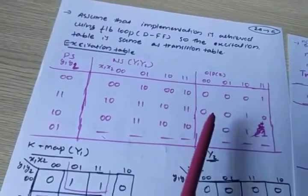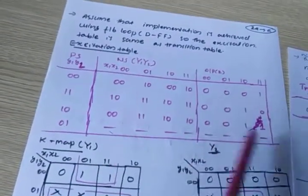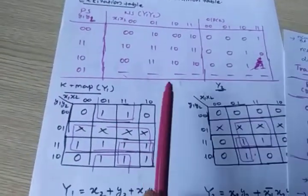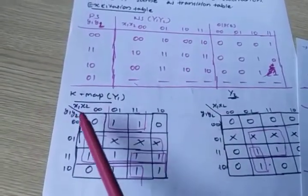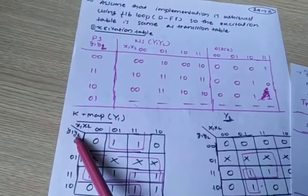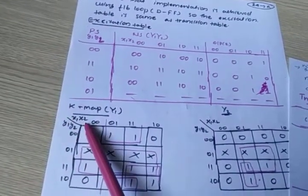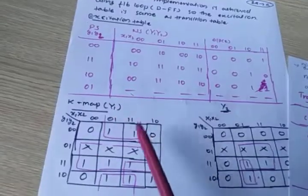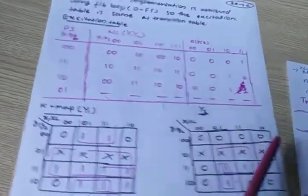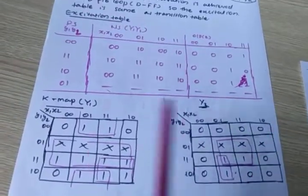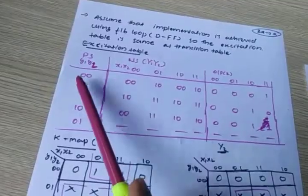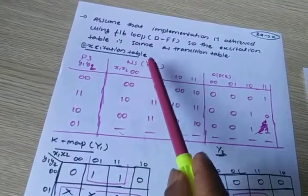Now you have to find Y1 and Y2 for the D flip-flop. First, write the K-map for Y1. The input variables are the present state variables Y1, Y2 and the inputs X1, X2, so it is a four-variable K-map.